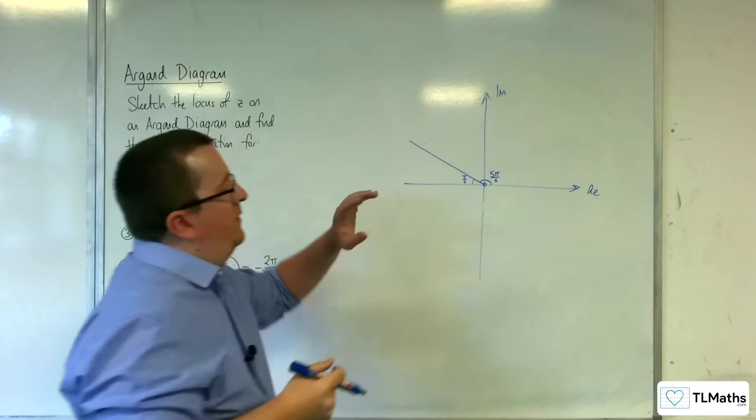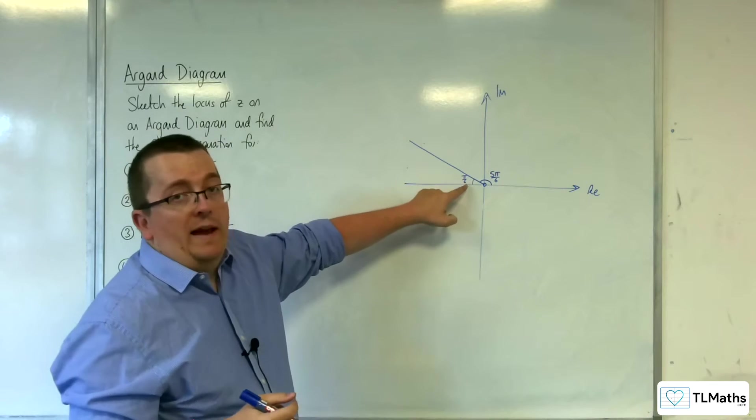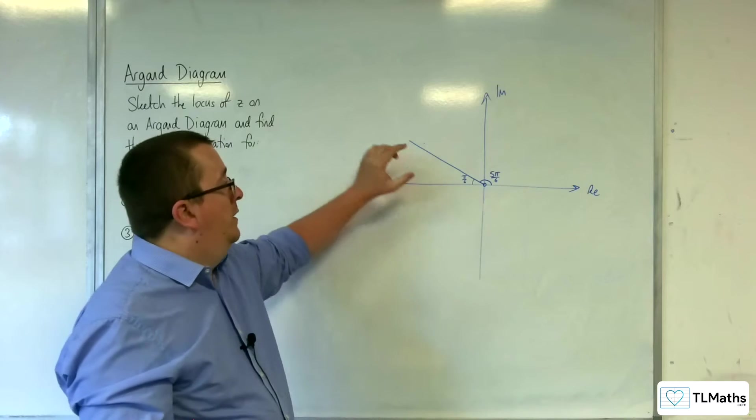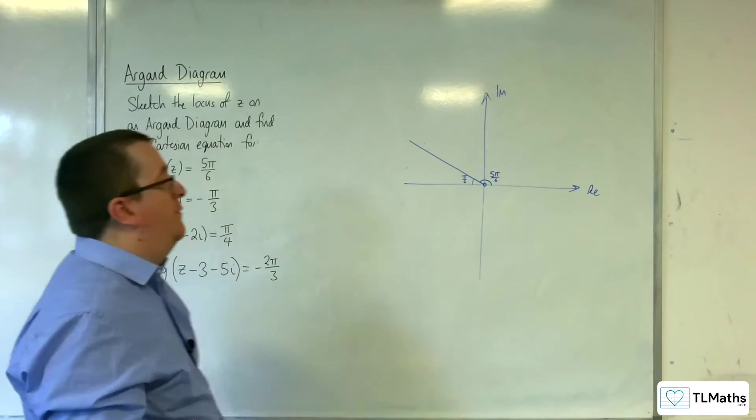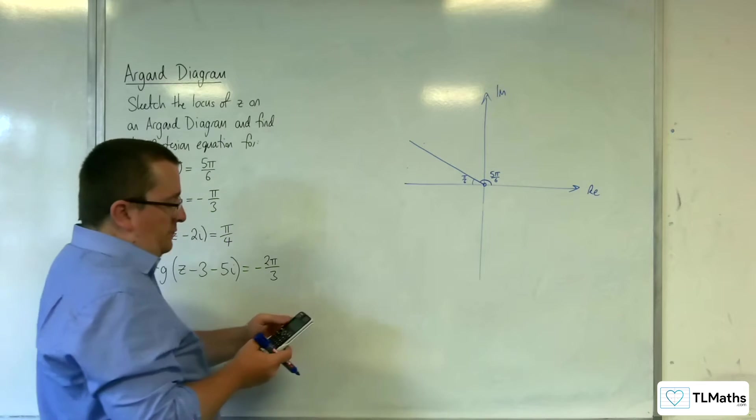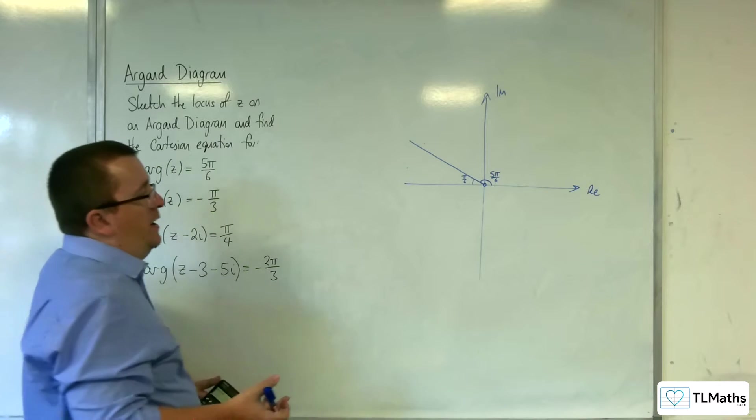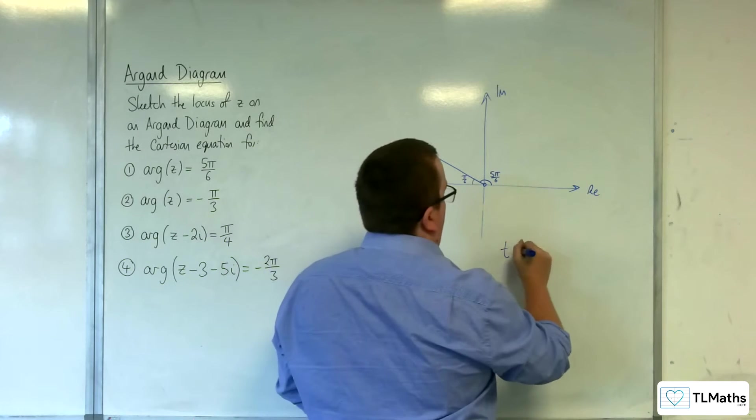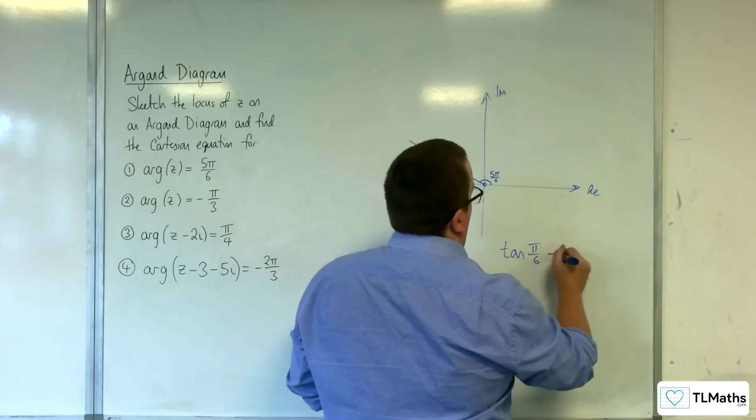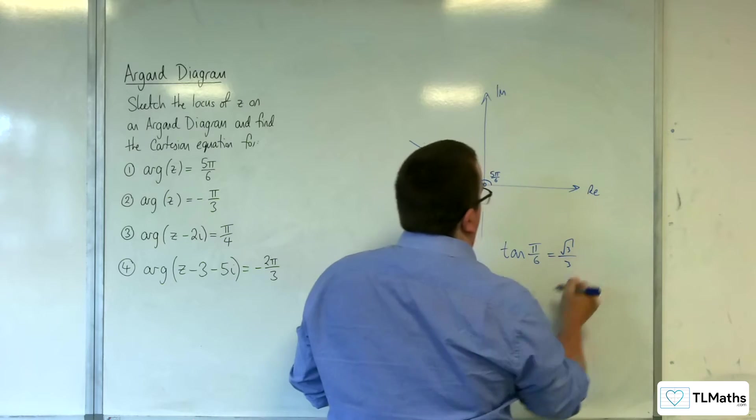And I can look at the tan of that angle is opposite over adjacent, which is going to give me the gradient of my line. But, of course, I'm going to have to take the negative of that. So, tan of π over 6 is √3 over 3. So I've done the tan of π over 6 is √3 over 3.